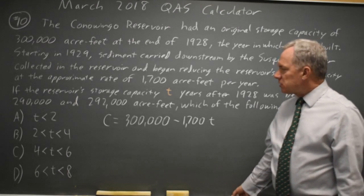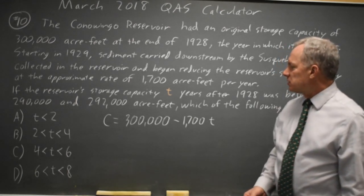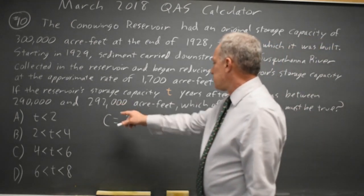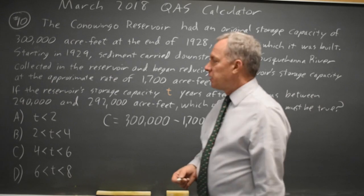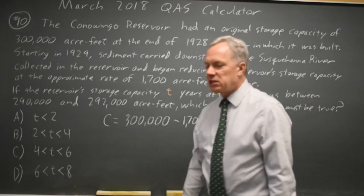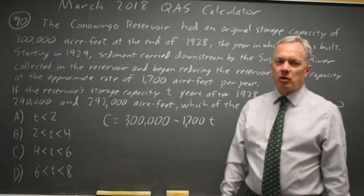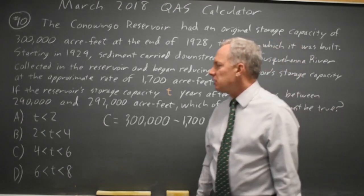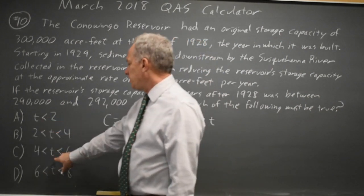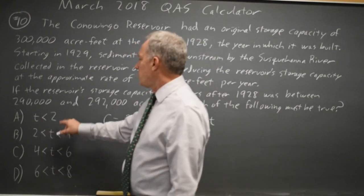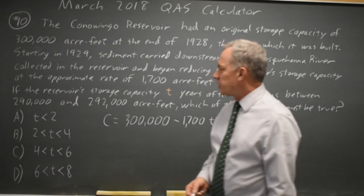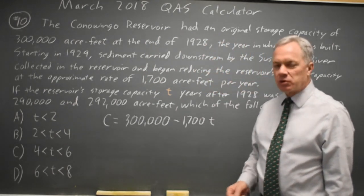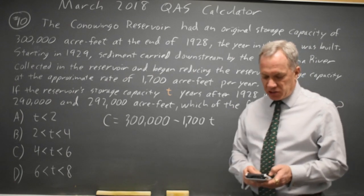And I could solve this one of two ways. I can either set C equal to 292,000 and solve for T, and the same for C equals 290,000 and solve for T, or I can choose particular T values and see whether T equals 1, 3, 5, or 7 matches the constraint, the capacities between 290 and 292. And both work, but the faster way is to just choose a T value.